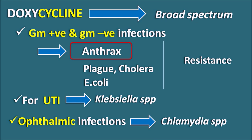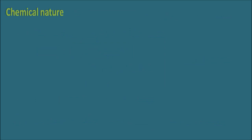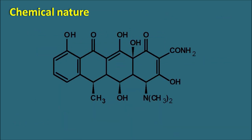Apart from these indications, doxycycline can also be used in the treatment of malaria. Regarding its chemical nature, doxycycline has a structure with four rings and hydroxyl groups at different positions. One important functional group is the carboxyamide moiety present at the second position.